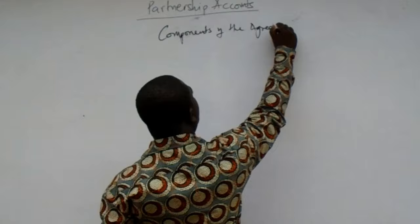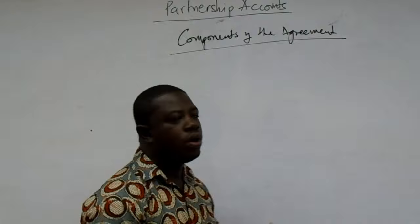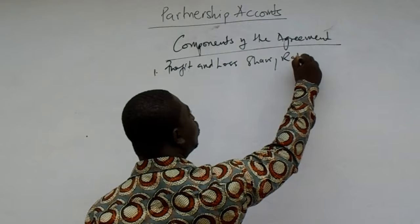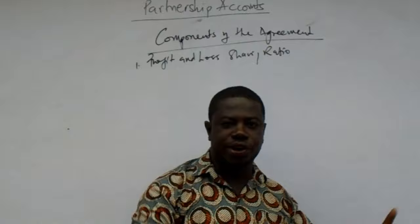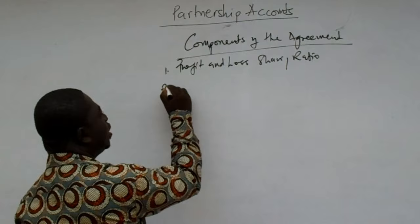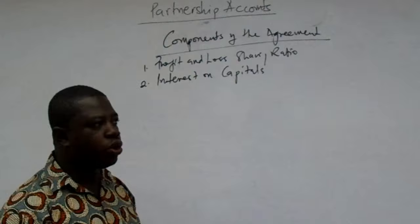Before the registration of the partnership business, the partners must agree on some things. Among those things, for the purpose of accounting, is the profit and loss-sharing ratio. In the partnership agreement, the ratio that is going to be used to share profits or losses should be clearly stated. Secondly, if there is any interest to be paid on capital, that should also be shown in the partnership agreement.